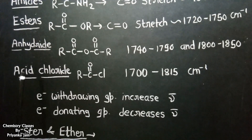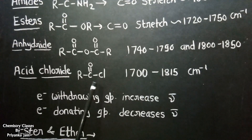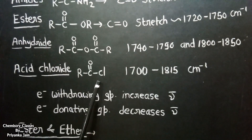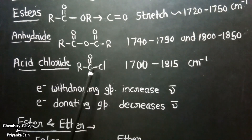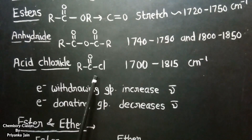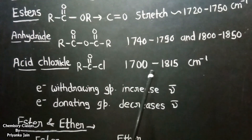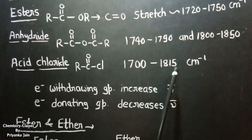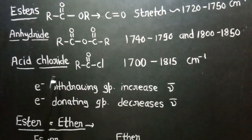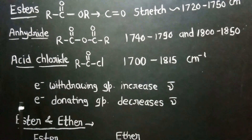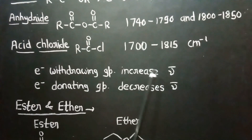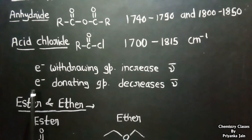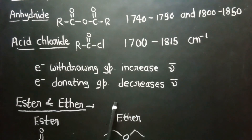In acid chlorides (RCOCl), chlorine is highly electronegative and highly electron-withdrawing, so the carbonyl absorbs at a much higher frequency, from 1,700 to almost 1,850 cm⁻¹. From this, we can conclude that if an electron-withdrawing group is present, it increases the stretching frequency, while if an electron-donating group is present, it decreases the frequency.